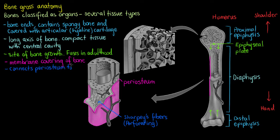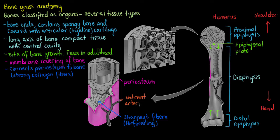To recap: there are two ends called the epiphyses, a middle portion called the diaphysis with a central cavity, and epiphyseal plates where growth and elongation occur. Since bone is an organ, we need to keep its cells alive — we do that with nutrient arteries that perforate the surface of the bone, delivering blood so the bone can grow new tissue and store nutrients.